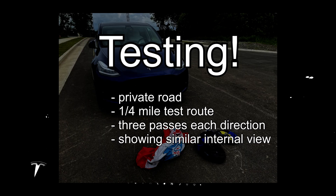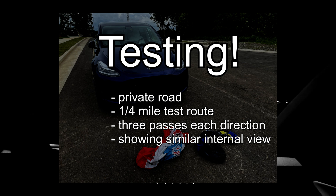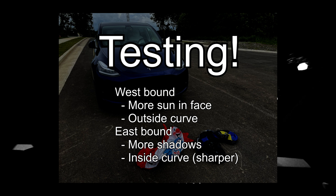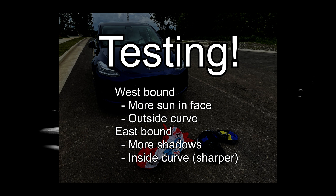Let's cover what kind of testing we'll be doing today. We're going to go over each of these detections. We'll do it on a private road, not a public road. We have about a quarter mile test area that we use for autopilot, and we'll be doing both directions three times. For each detection, the first three tests will be westbound — more sun in the face, and it will be the outside of the curve, so it's not as sharp. For the next three, it will be eastbound — more shadows, and it's the inside of the curve, which is sharper and more likely to trigger an event.